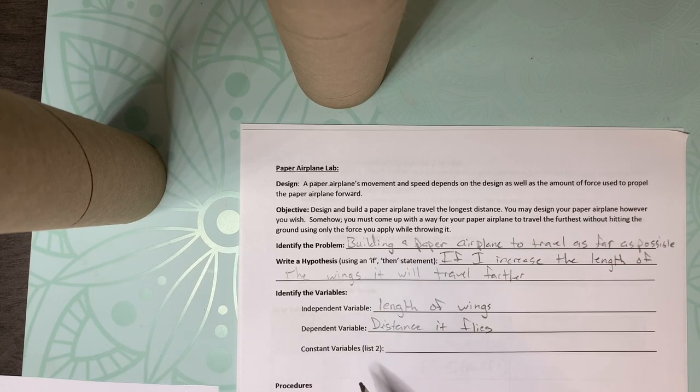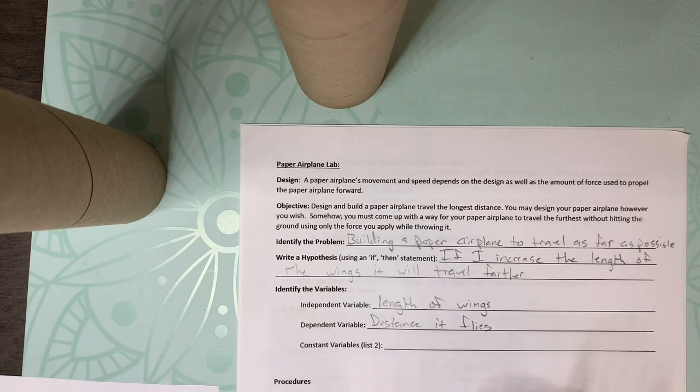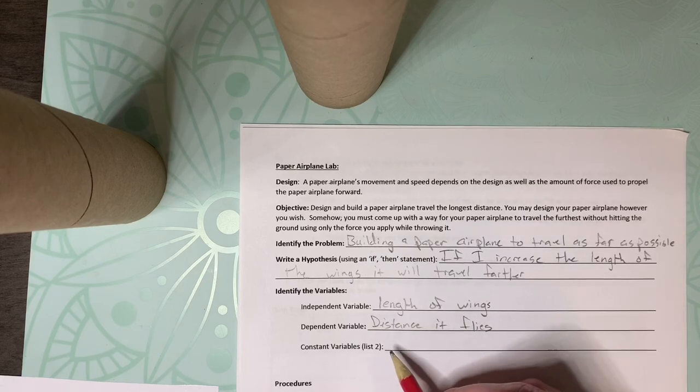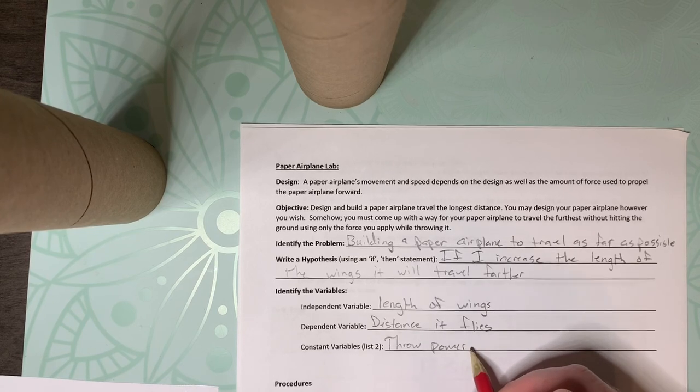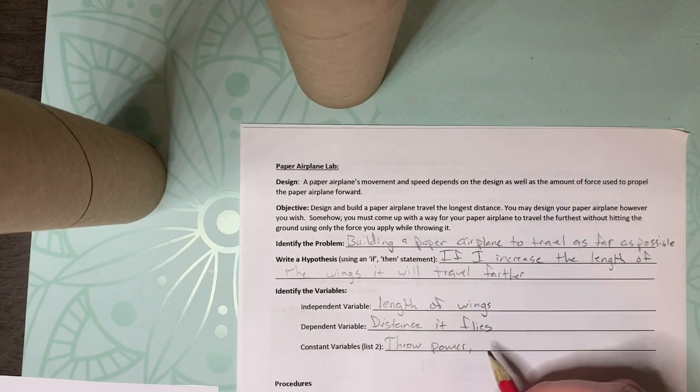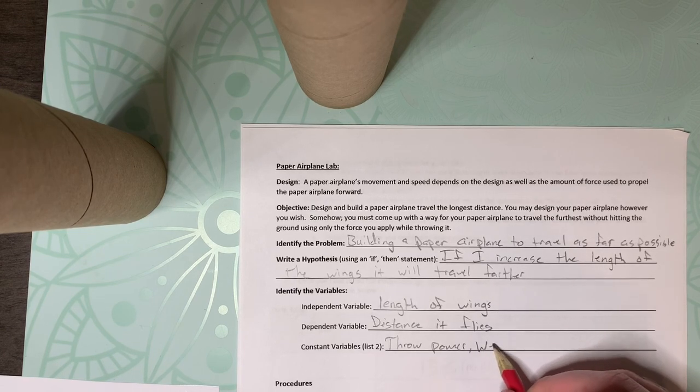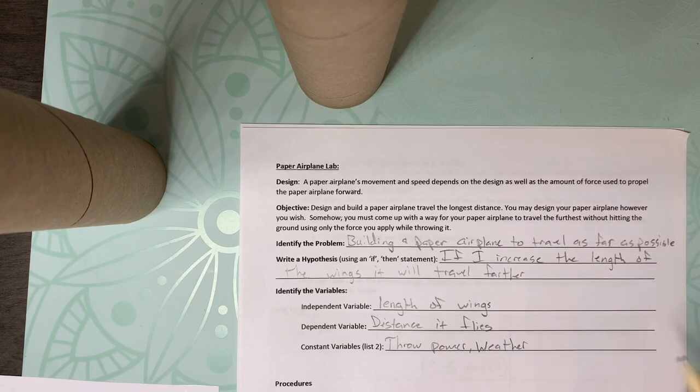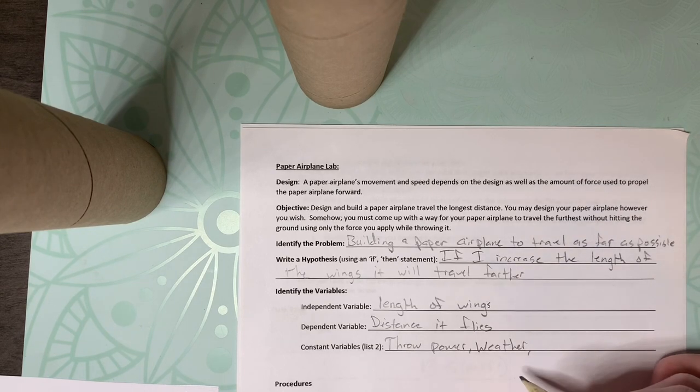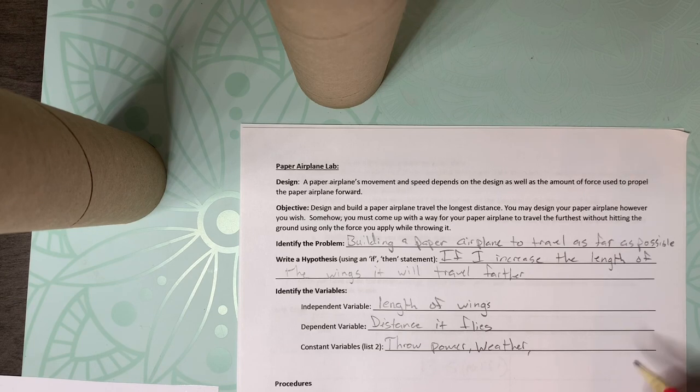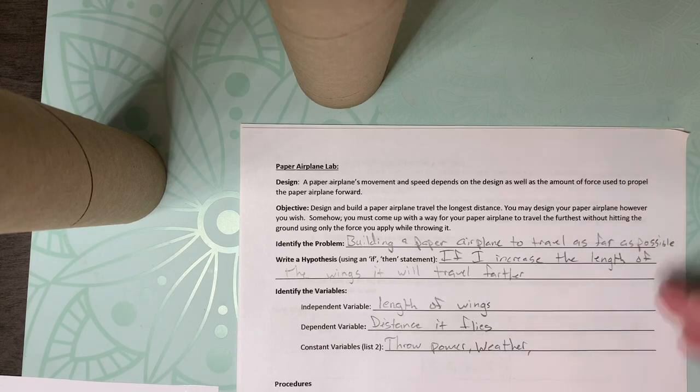Constants. These are things that you have to have the same for each test to be able to count it as valid. So two of the constants: throw power could be some. We want to throw it with the same amount of intensity every time. We want to control kind of like the weather or the surrounding area. Like we don't want fans laying on the ground and blowing it up because that would skew our data. There's a whole list of others that you can do, and then that way you guys can come up with some others. There's two just as kind of an example.